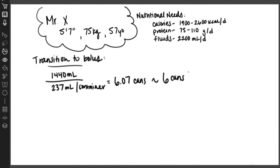To create our feeding schedule, we can try to start with two cans three times a day, or about 474 milliliters three times a day to mimic a breakfast, lunch, and dinner type schedule.